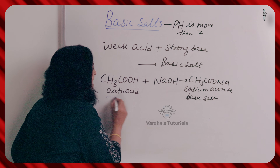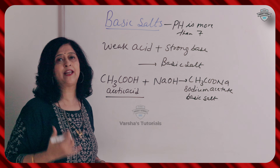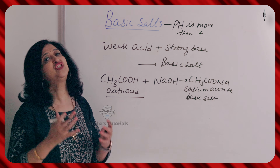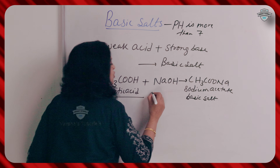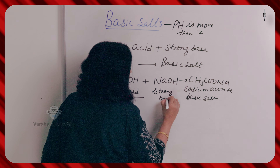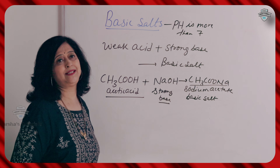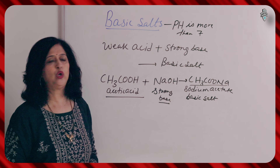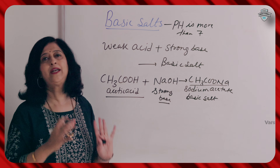Let's look at this example. Acetic acid — you all know acetic acid is a weak acid. It is an organic acid; it is weak acid, meaning when you add it in water it is partially ionized. This is combined with NaOH — sodium hydroxide — which is a strong base. When they react, CH3COONa — sodium acetate — is formed, which is a basic salt. Sodium acetate is a weak salt but it is a basic salt.